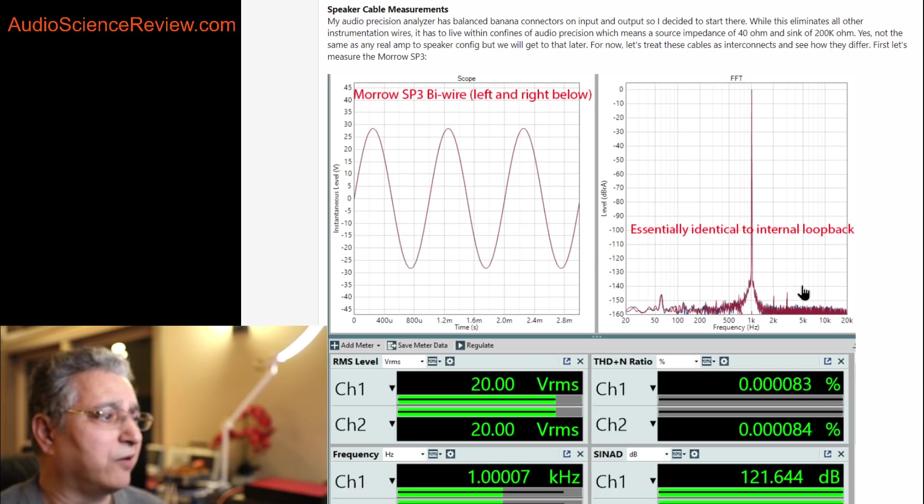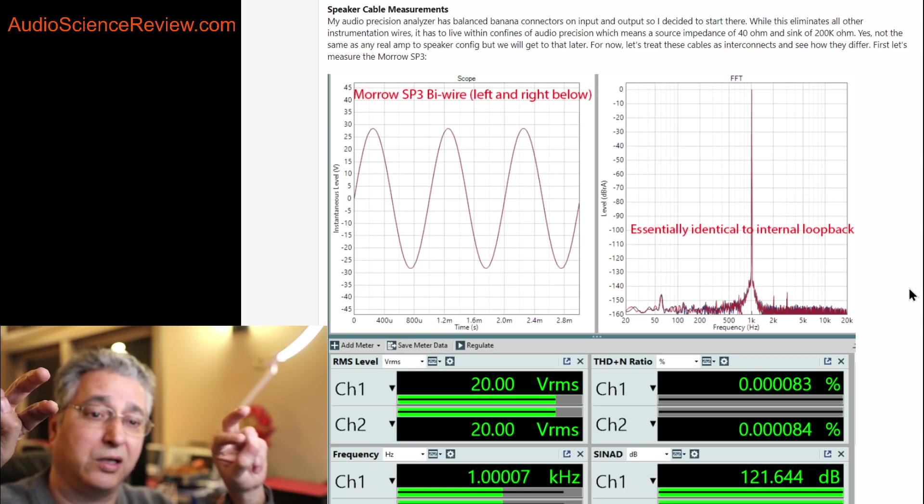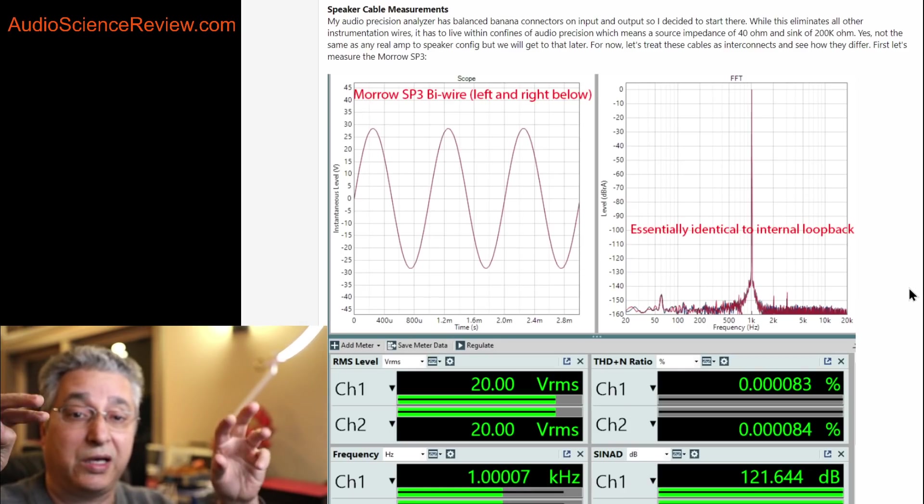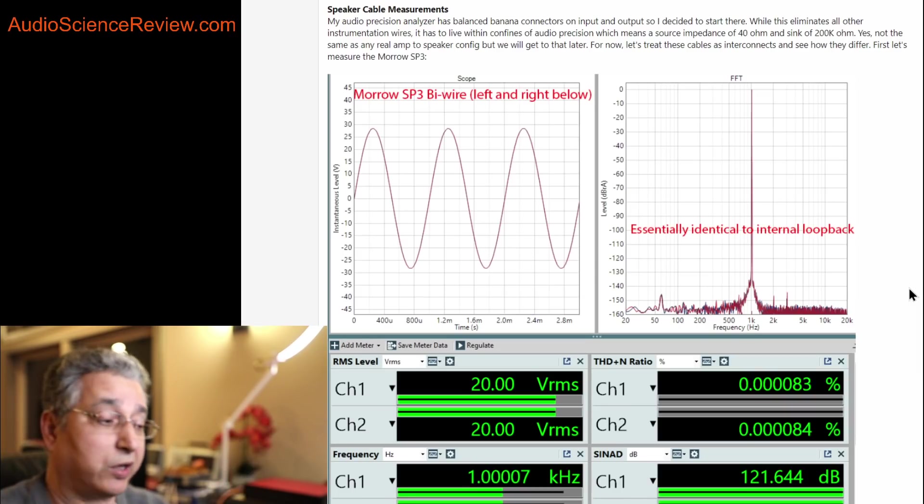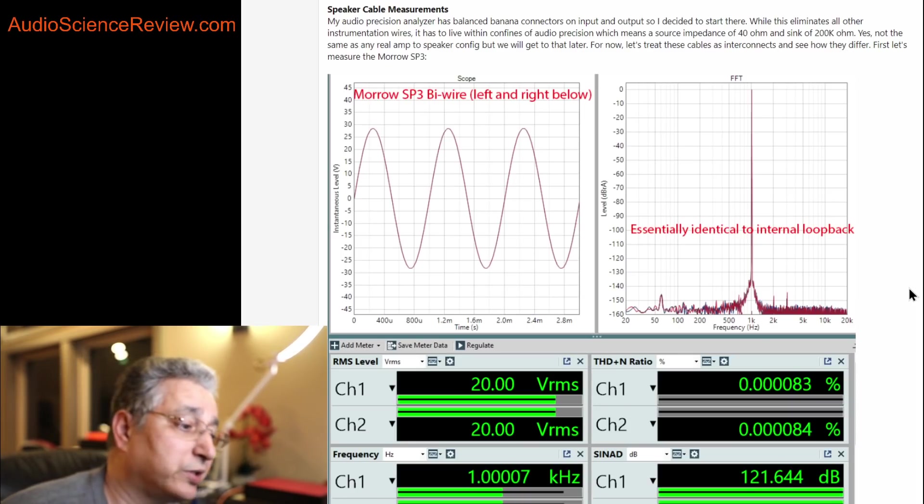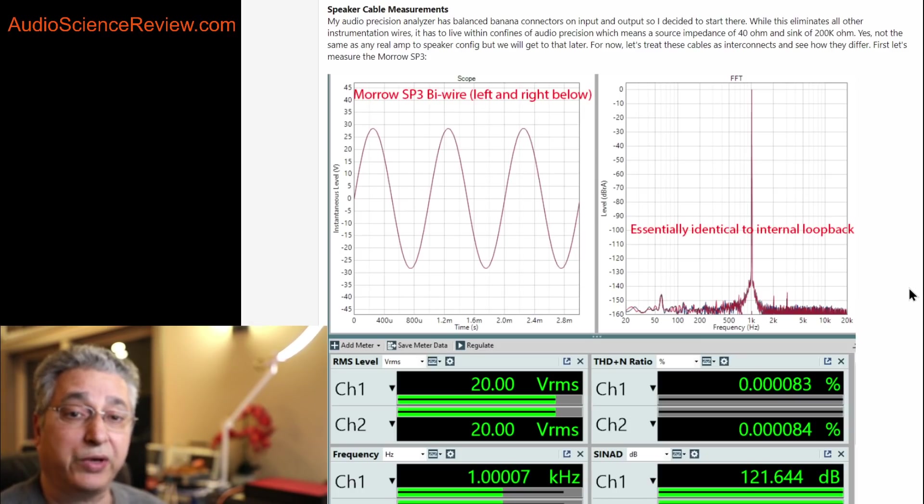The easiest way for me to test the cable and nothing but the cable is to hook it up directly to my Audio Precision analyzer. My Audio Precision analyzer has a set of banana jacks that are used for differential measurements. It has them both for input and output. The drawback is that the output impedance is 40 ohms and the input impedance by default is 200 kilo-ohms.